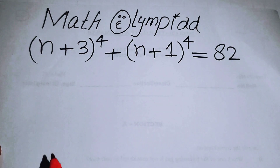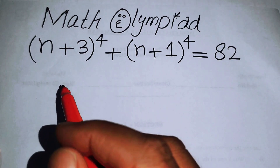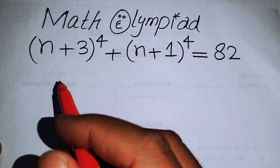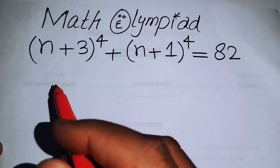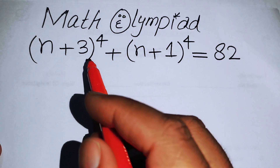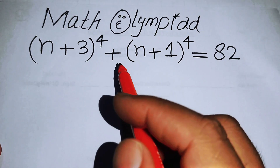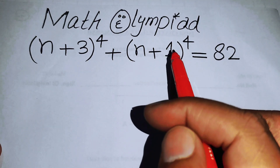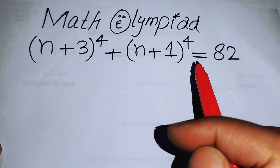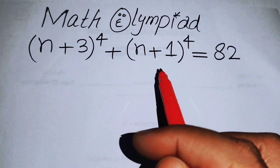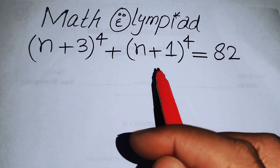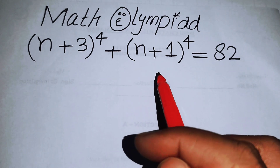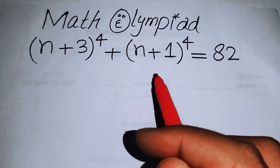Hello everyone, welcome back to the Map of Mathematics. In this video we are going to solve this nice algebra problem: (n+3)⁴ + (n+1)⁴ = 82, and we will solve this problem for the values of n.